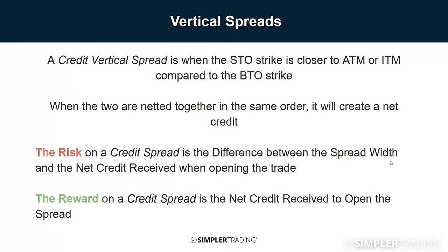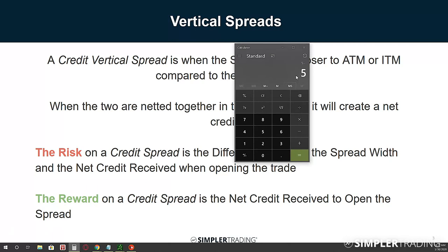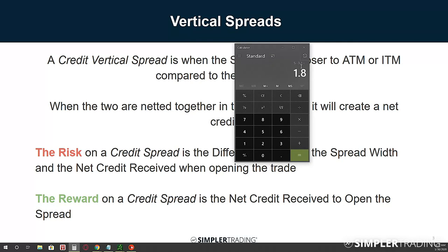The profit potential on a credit spread is actually the credit itself when you opened the trade - whatever that net credit was on the order ticket is your total profit potential. For example, if I was looking at a five-point spread and received a $3.20 credit, my profit potential is $3.20. That means my risk on the trade is $1.80, because there's still part of that spread that isn't covered by the credit - that ends up being our risk.